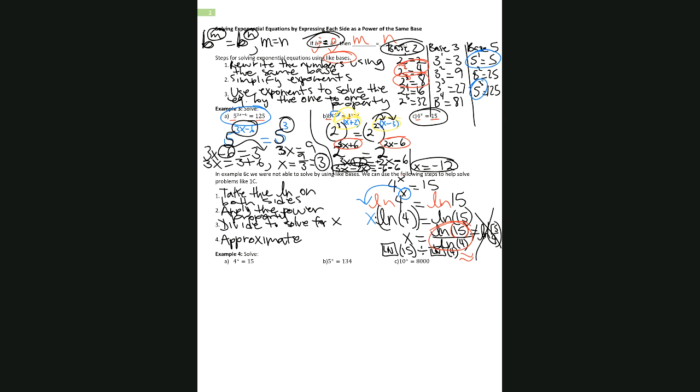For example four, we already know the exact answer is ln(15) divided by ln(4). Using a calculator, that gives approximately 1.953 if we round to three decimal places.